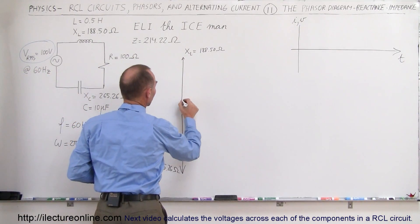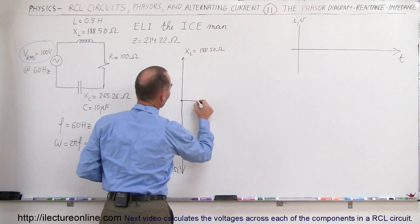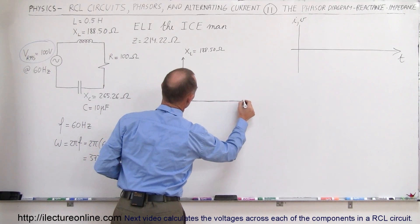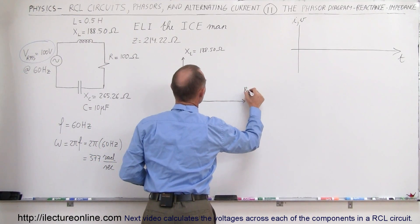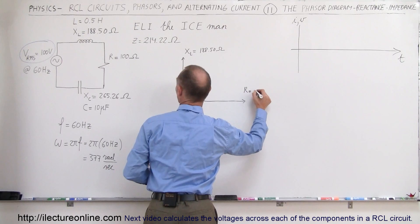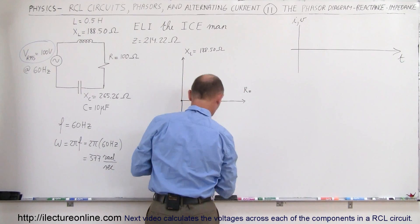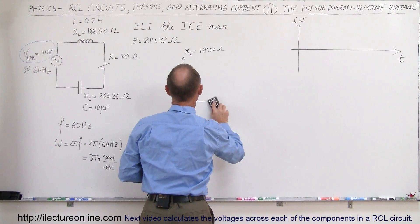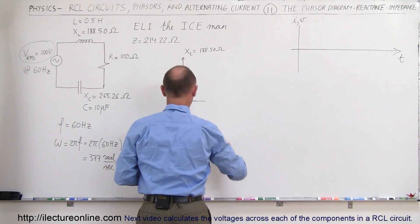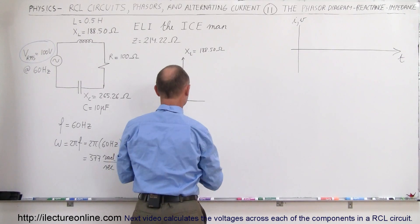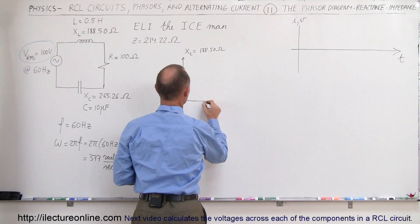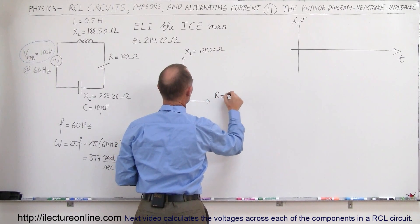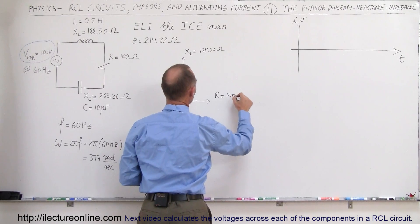Then we have the resistance, which goes sideways this way, and it's 200 ohms — actually, 100 ohms. I made it too long. So R equals 100 ohms; that makes it about this long right here.